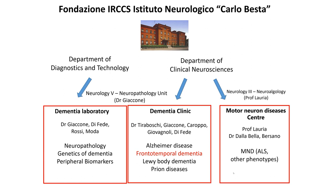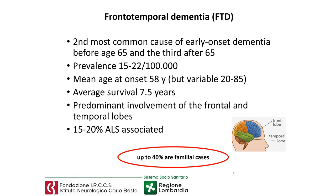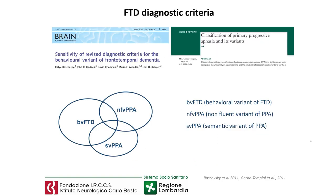So let's go to frontotemporal dementia. These are neurodegenerative disorders representing the second most common cause of early onset dementia before the age of 65, and the third after 65. The mean age at onset is 58 years, but is highly variable between 20 to 85 years, with a mean survival of 7.5 years. This dementia is characterized by predominant degeneration of the frontal and temporal lobes. In 15 to 20% of patients, amyotrophic lateral sclerosis can be associated. These pathologies are characterized by a high genetic component, and up to 40% of cases are familial cases.